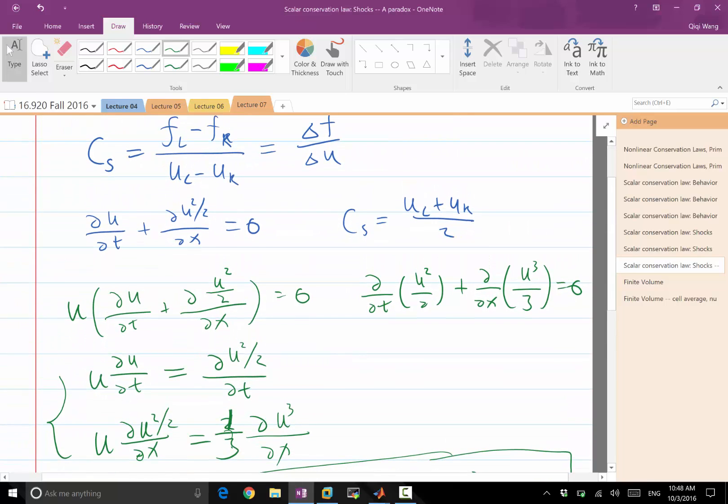So we have two equations. One is the original Burger's equation, and another conservation law derived from Burger's equation.